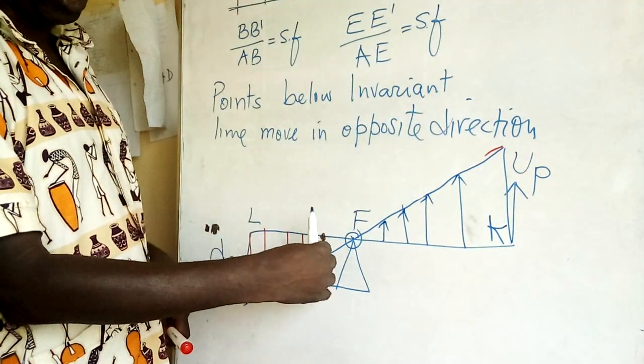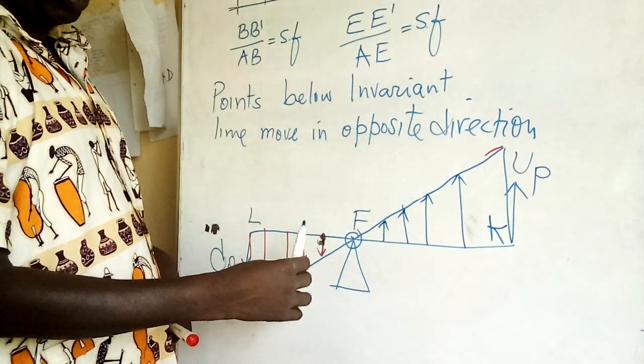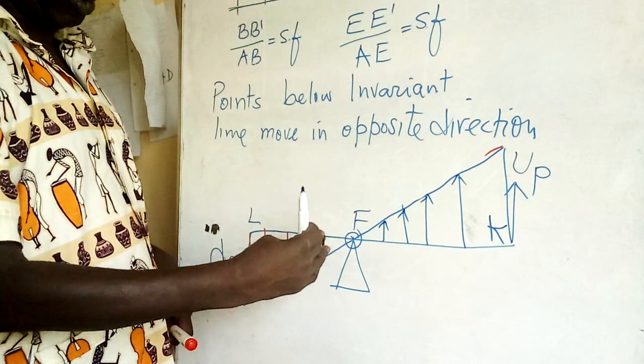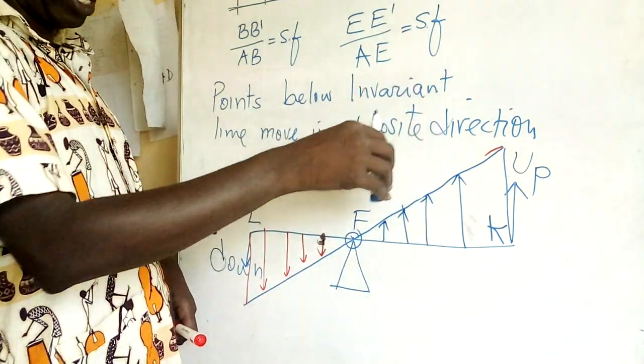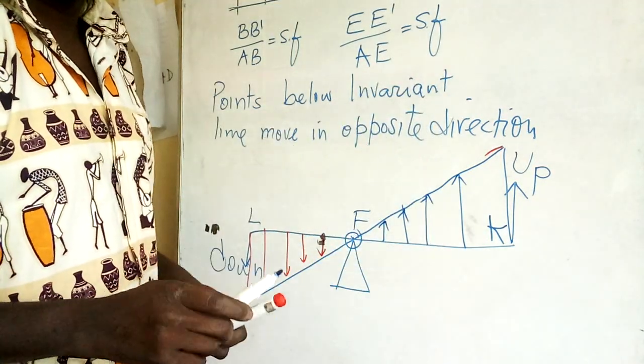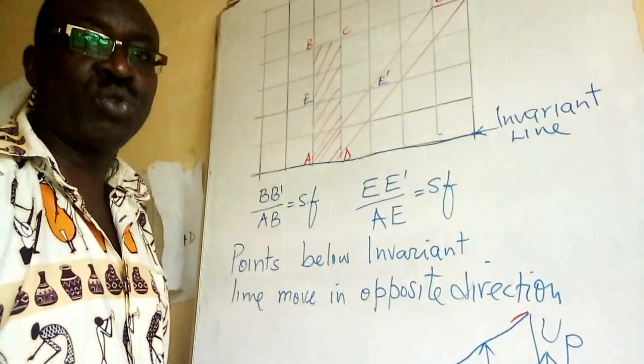Now the points which are opposite the fulcrum, they do also the opposite. If this one's moved up, this one's moved down. So this is very important for you to know in shear.